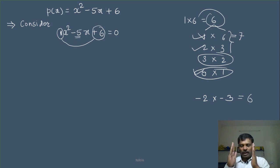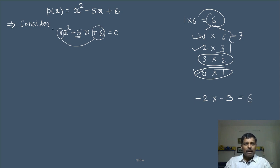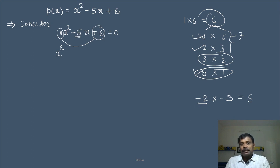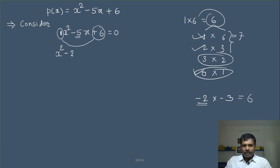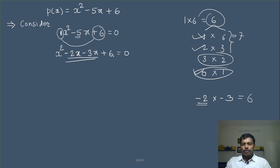अब middle term को split करते हैं — minus 5x को minus 2x और minus 3x में split करो। तो equation बनती है: x square minus 2x minus 3x plus 6 equal to 0. तीन term थे, बीच की term को split करके चार term बनाये। अब पहले दो term में से common निकालोगे।